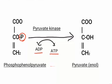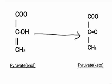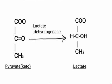Pyruvate in its enol form is spontaneously converted into pyruvate in the keto form. If glycolysis occurs in an aerobic condition, the end product is pyruvate, and the process stops here. But if glycolysis occurs in an anaerobic condition, lactate is obtained as the end product. Pyruvate in keto form, in the presence of the enzyme lactate dehydrogenase, gets converted into lactate, and the procedure in anaerobic condition stops here.